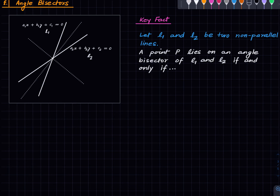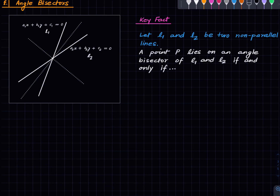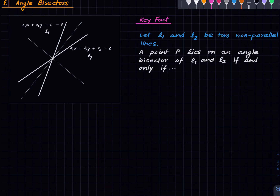The question we are asking is: can we express these angle bisectors algebraically — can we write down their equations? Indeed we can. The key fact that enables us to do this is the following geometric fact, nothing to do with coordinate geometry per se: a point P lies on an angle bisector — either one of the two — if and only if the perpendicular distance from P to l₁ equals the perpendicular distance from P to l₂.